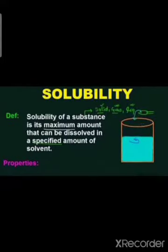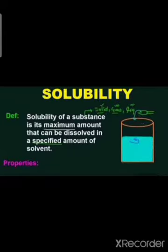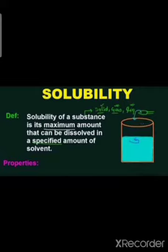Now let us discuss what is meant by the solubility of a substance and what effect temperature has on it. The solubility of a solute is the number of grams of that solute which will dissolve in 100 grams of water at a particular temperature. The effects of temperature on solubility are: solids dissolve better in hot water; gases dissolve better in cold water; and for liquids — liquids are miscible if they dissolve in water and immiscible if they do not mix with water, and changing the temperature does not affect this.